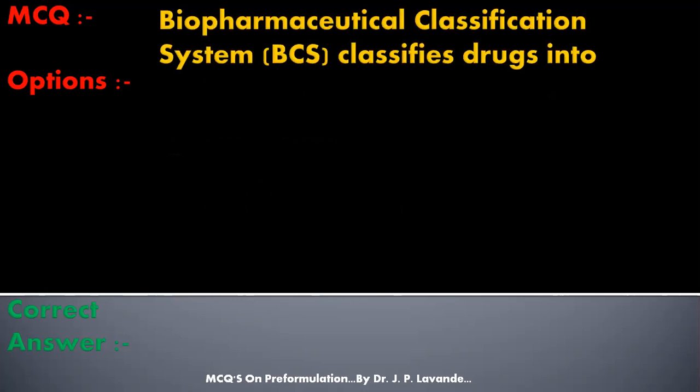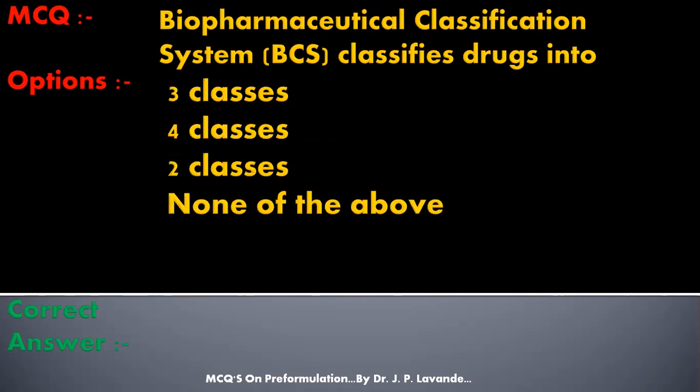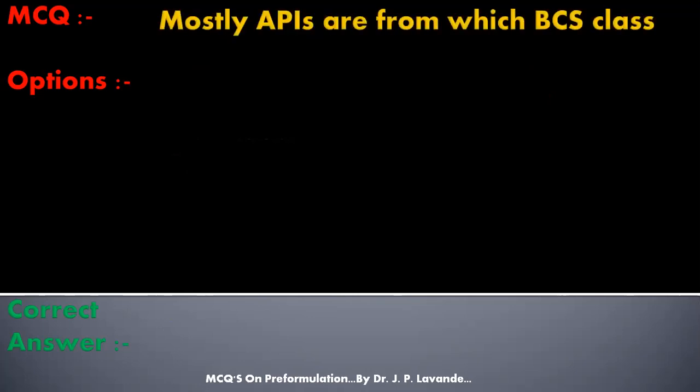Next multiple choice question: The Biopharmaceutical Classification System classifies drugs into — options: Three classes, Four classes, Two classes, None of the above. Correct answer is four classes. The BCS classifies drugs into four classes.